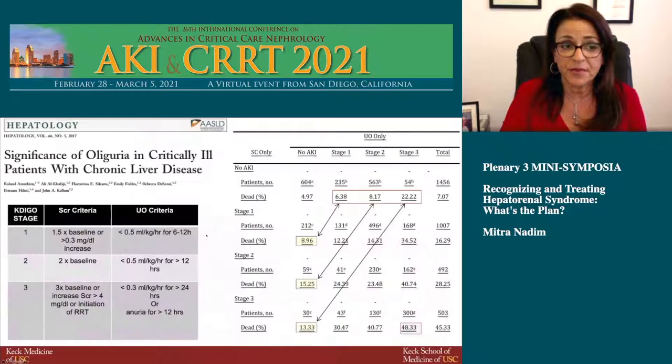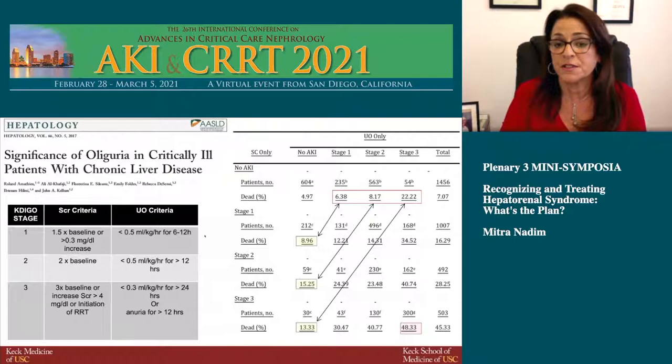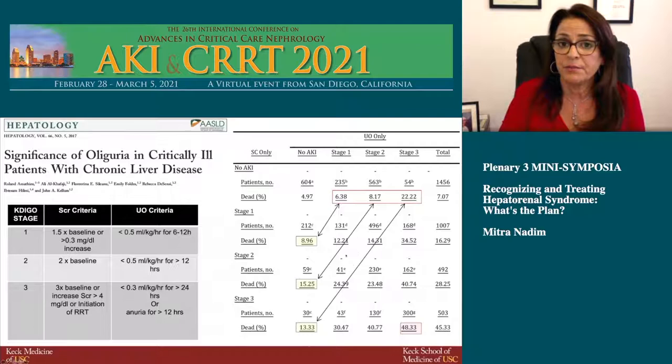Subsequently, Dr. Kellum and his group in Pittsburgh did a retrospective analysis of close to 3,000 patients with liver disease in eight ICUs. Using KDIGO serum creatinine and urine output criteria, they showed that patients with no serum creatinine-based kidney injury who met urine output criteria for stage 3 had higher mortality compared to those with serum creatinine criteria but no urine output criteria. Patients meeting both stage 3 criteria had mortality as high as 48% — very similar data to non-cirrhotic patients.